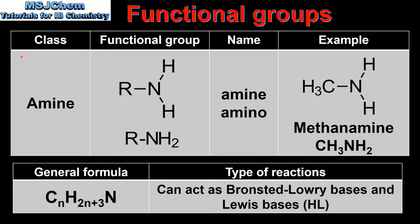Next we look at amines. The class name is amine and the functional group name can be amine or amino. The amine functional group is a nitrogen atom bonded to an alkyl group which is also bonded to two other hydrogens. The hydrogen atoms can also be replaced by alkyl groups depending on if the amine is primary, secondary or tertiary. An example is methanolamine which is a primary amine. The general formula is CnH2n+3N. Amines can act as Brønsted-Lowry bases and Lewis bases.